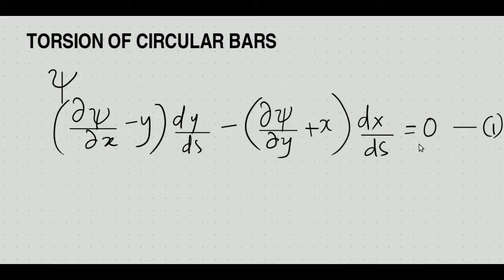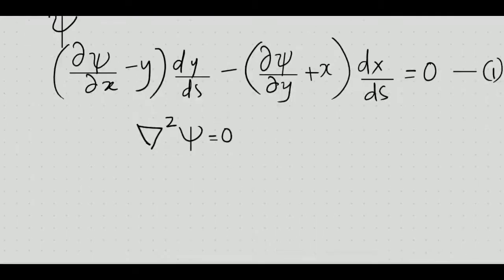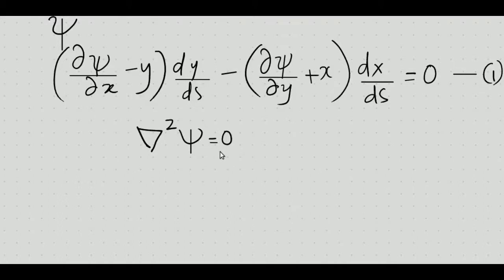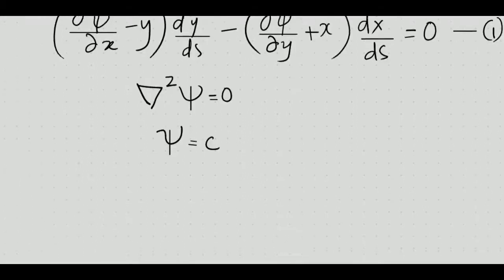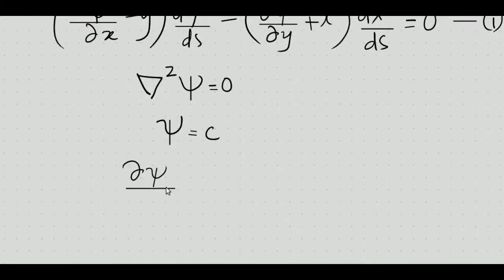The simplest form of a harmonic function ψ — that is, a function which satisfies Laplace's equation ∇²ψ = 0 — is the function ψ equal to c, where c is a constant. This is the simplest function which satisfies ∇²ψ = 0. From this we get that ∂ψ/∂x = 0 and ∂ψ/∂y = 0.